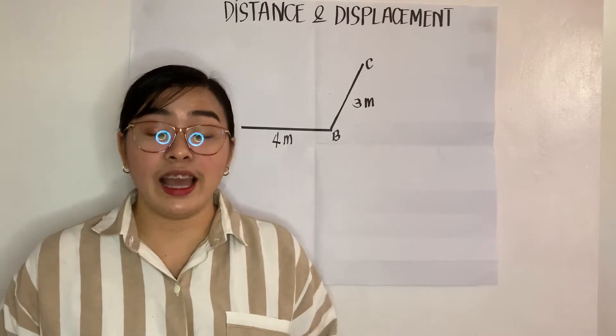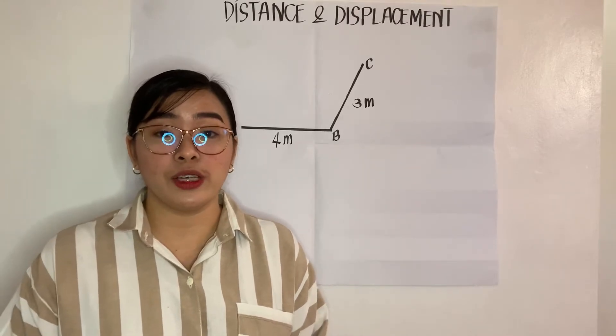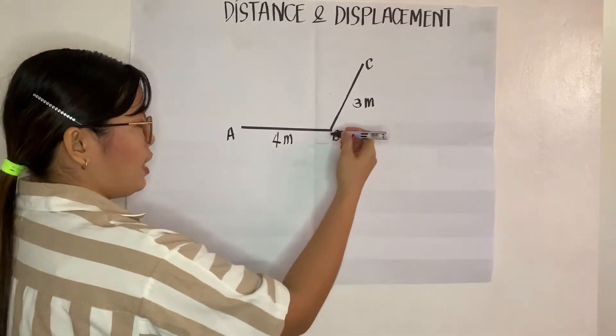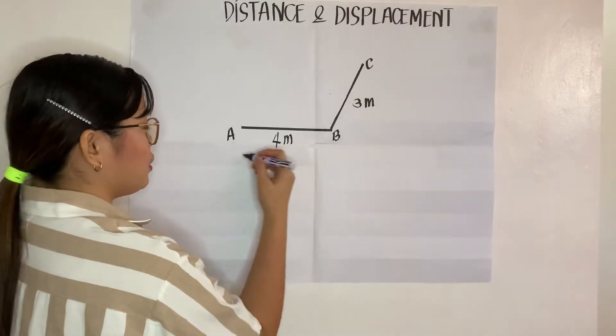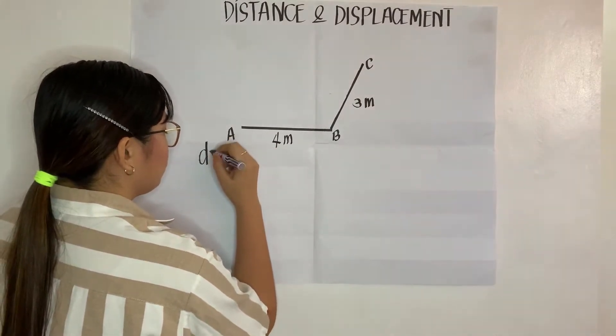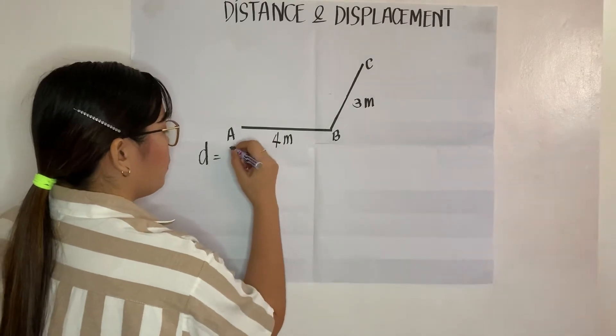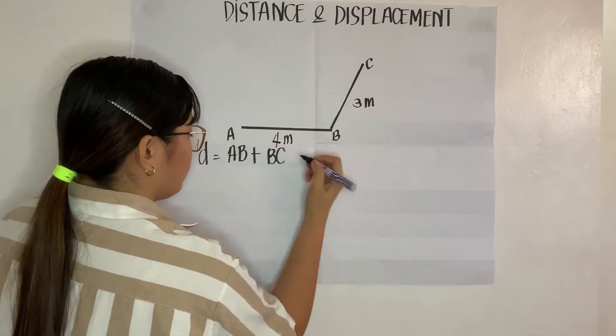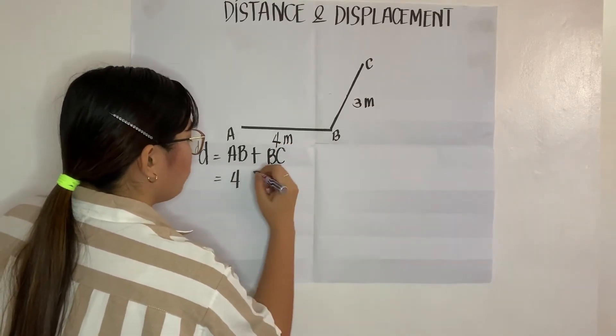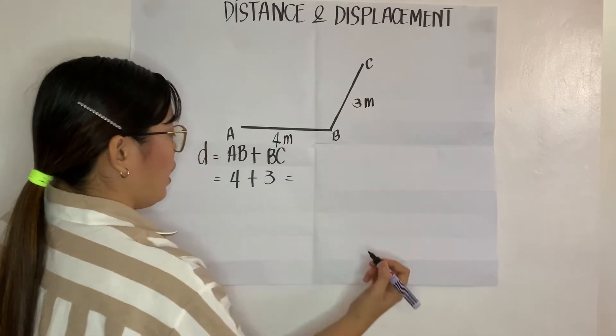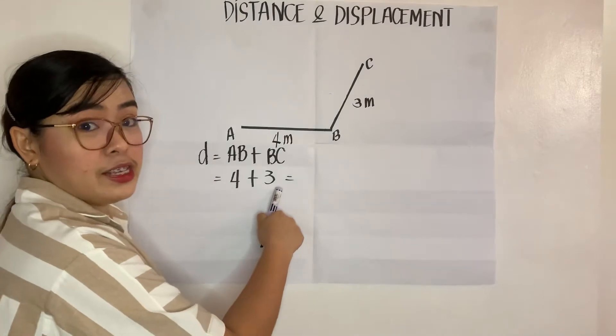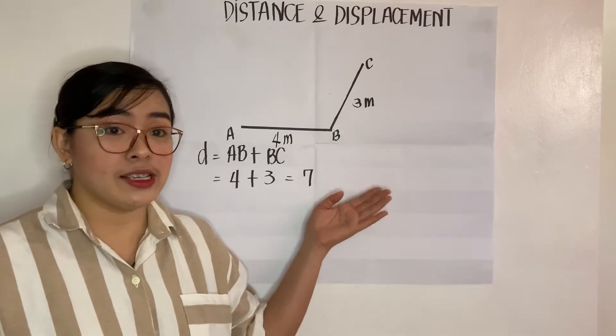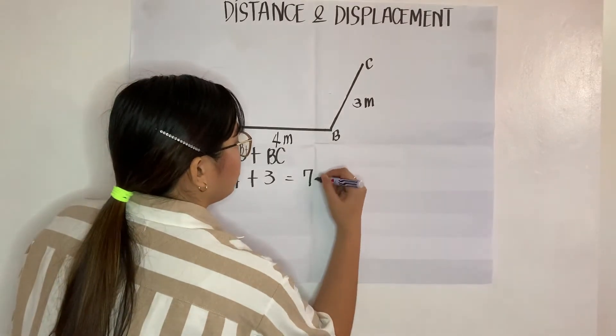So, we say that distance is the length of the entire path that an object traveled. So, if your point A to point B is 4 meters and then from point B to point C is 3 meters, we have distance is equal to AB plus BC. So, we have 4 plus 3, and then we have 4 plus 3 is equal to 7. So,